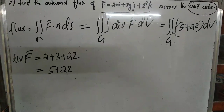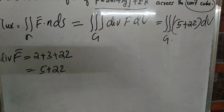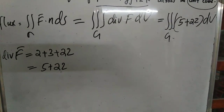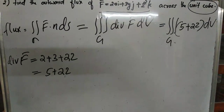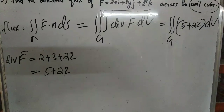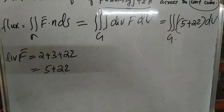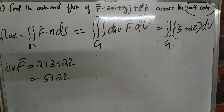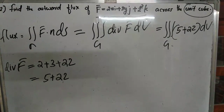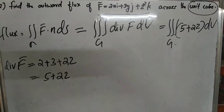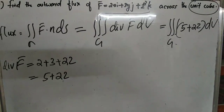Now we need the limits. For the unit cube, the length, breadth, and height are each 1 unit. So the limits are 0 to 1 for x, 0 to 1 for y, and 0 to 1 for z.